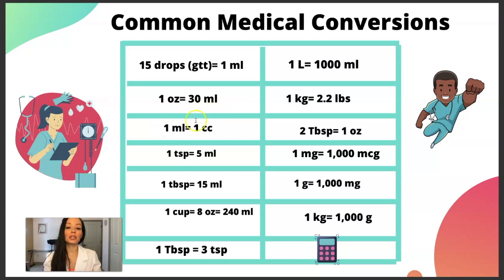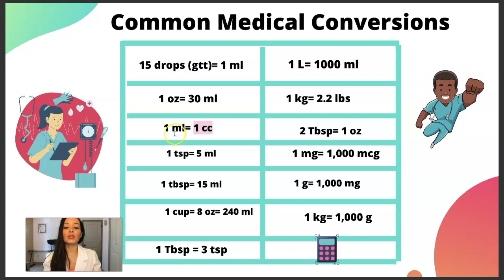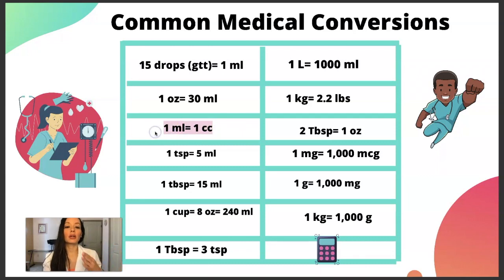One ounce is equal to 30 milliliters. One milliliter is equal to one CC. Back in the day, older nurses and doctors referred to things as CCs, but this is no longer correct terminology — we are supposed to say milliliters, as errors were occurring with CC. So if you hear someone say 10 CCs, you know that means 10 milliliters — it's a one-to-one ratio.